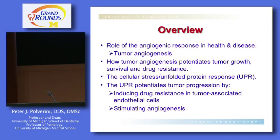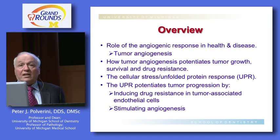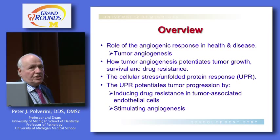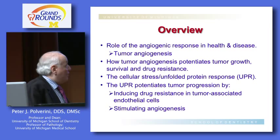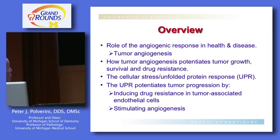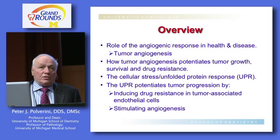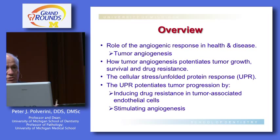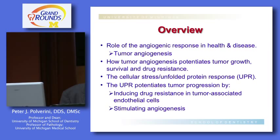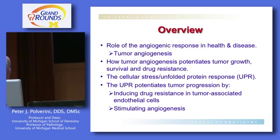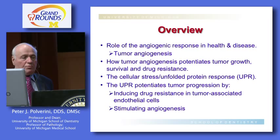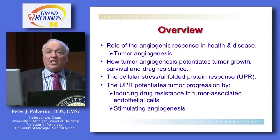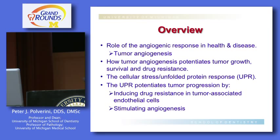I'll specifically focus on tumor angiogenesis, because that's where the bulk of our work has been. I'll show how tumor angiogenesis is important in potentiating tumor growth, tumor survival, and plays an important role in conferring drug resistance — not only on tumor cells, but also on host cells often present in tumors. I'll also talk about the stress response, also known as the unfolded protein response. Lastly, I'll discuss how the unfolded protein response potentiates tumor growth by inducing drug resistance in tumor-associated endothelial cells and by stimulating tumor angiogenesis.